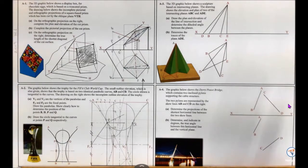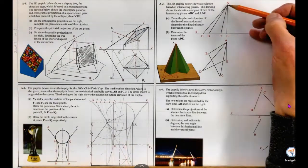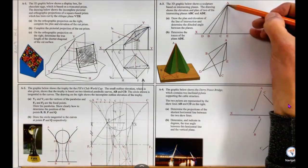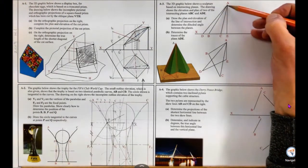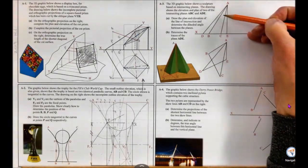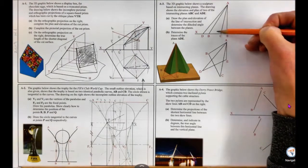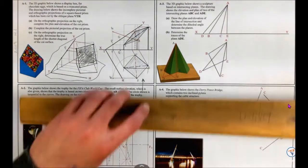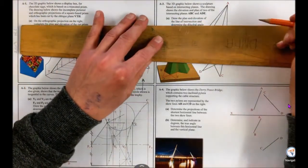Anytime we need to find the line of intersection we need to do what are called horizontal sections. I'm going to have one point on the line of intersection because this point is common to both planes — the two planes touch at the same point — so I only need one other point. I'm going to find a point somewhere here and then draw the line of intersection using a horizontal section.